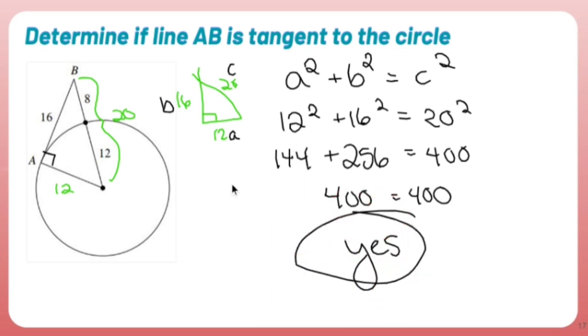Again, a tangent line has to be perpendicular to the radius that it hits. So in other words, since this is a right triangle, it is perpendicular because it creates a 90-degree angle.